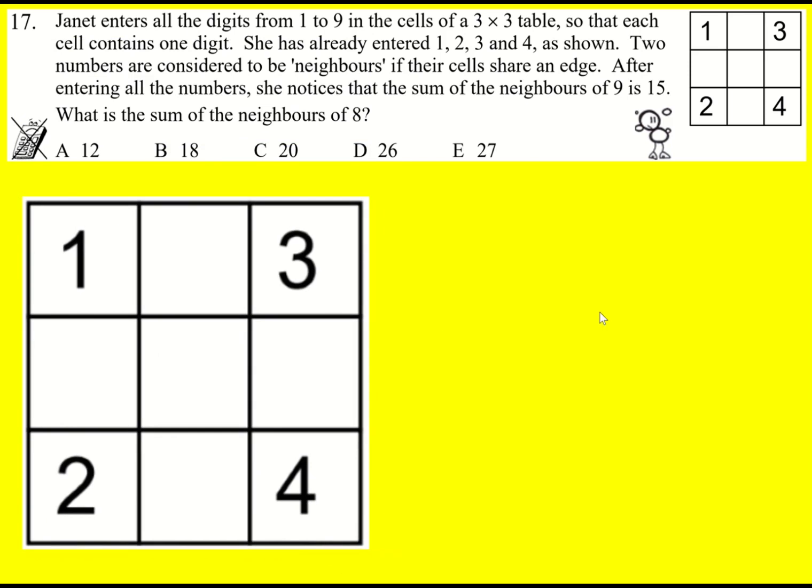Let's work out where 9 has to go in this table using logic. So if I try and put 9 on the left, for example, then its neighbors at the moment add to 3. So to get to 15, this would have to be 12, which is not possible because we're only allowed to enter the digits from 1 to 9.